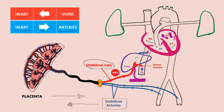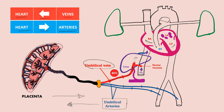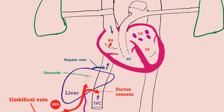The umbilical vein carries about 80% oxygenated blood from the placenta to the fetus, and it goes to the liver where it divides into two branches. A small branch supplies the sinusoids of the liver. The larger branch bypasses the liver and goes directly to the inferior vena cava — we call this the ductus venosus. This branch carries oxygenated blood into the inferior vena cava.